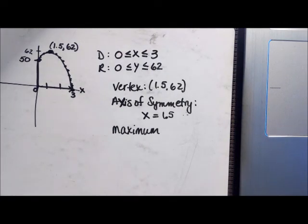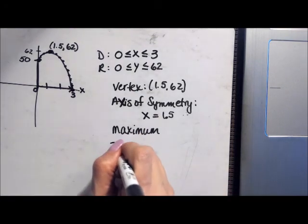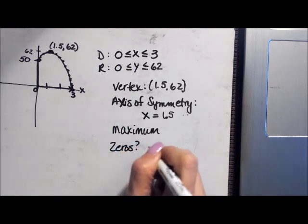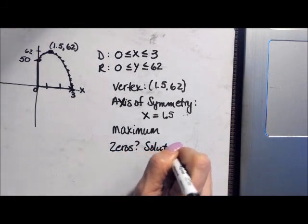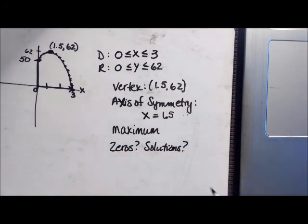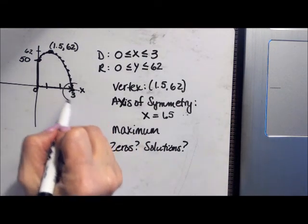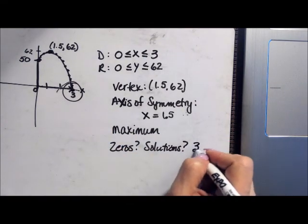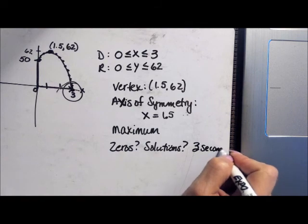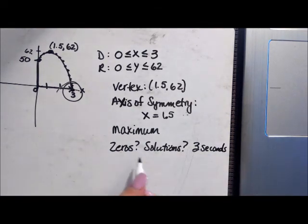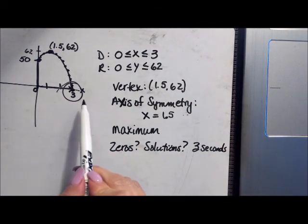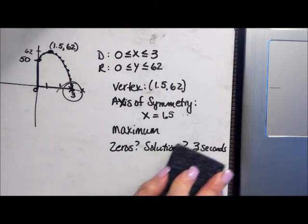Let's see what else is there. I think that's all I'm coming up with right now. Oh, how long was the ball in the air? What are the zeros or the solutions? What's the solution? It was in the air for three seconds. The solutions or the zeros are the x-intercepts. All right, and that kind of recaps a lot of information about quadratics.